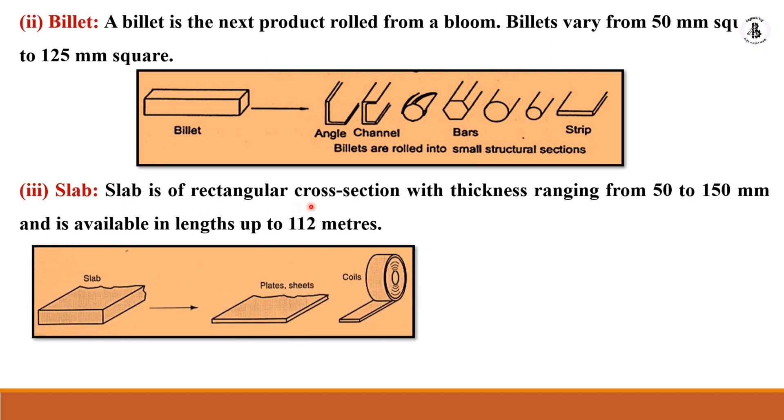Slab is of rectangular cross-section with thickness ranging from 50 to 150 mm and is available in lengths up to 112 meters. This is the slab material.